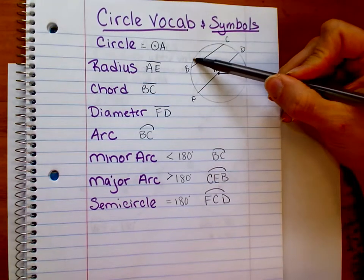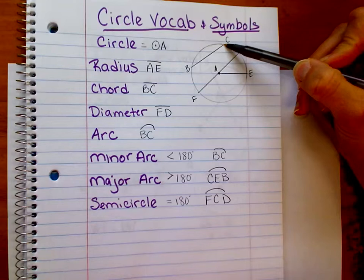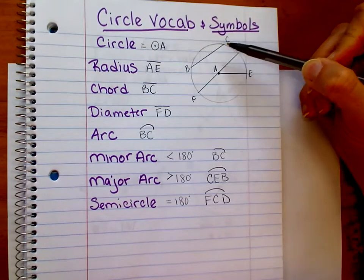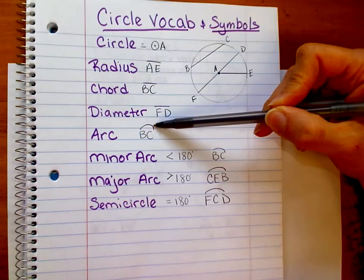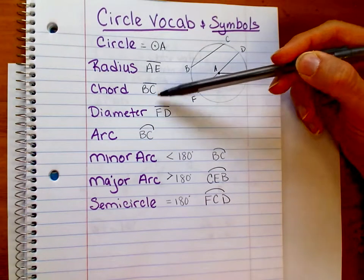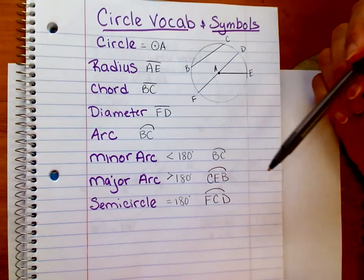An arc is the distance along the circle from one point to another. We distinguish an arc from a chord by putting a little arc symbol over it. You can tell whether it's a chord or an arc by what symbol is on top of it.